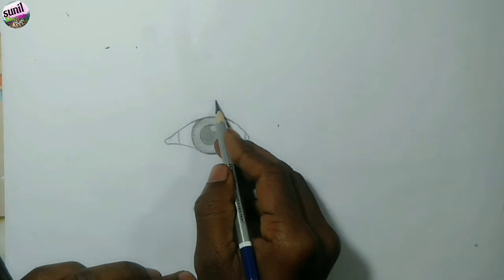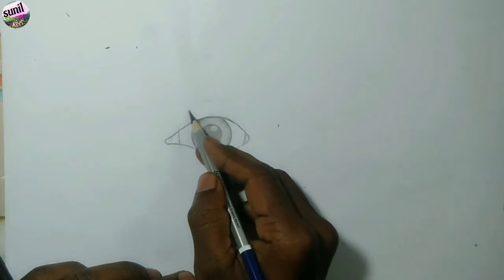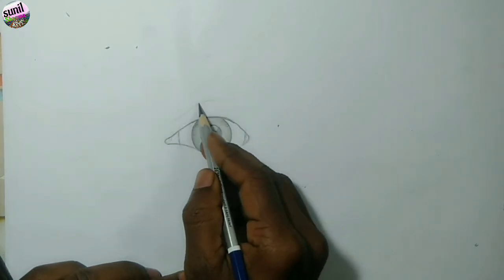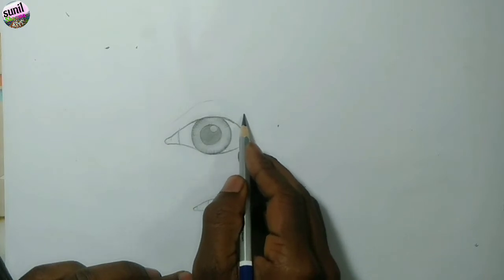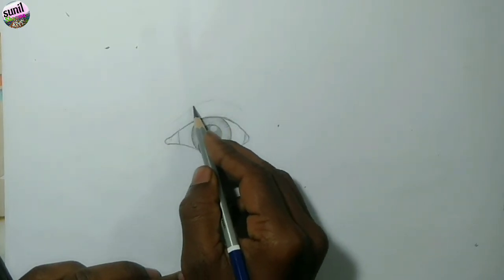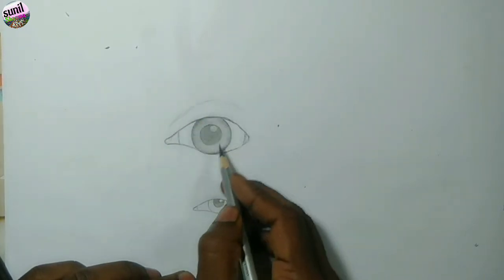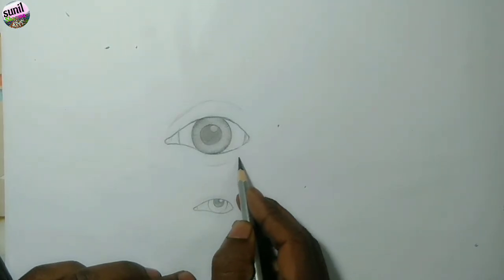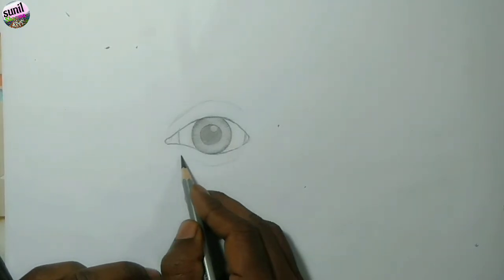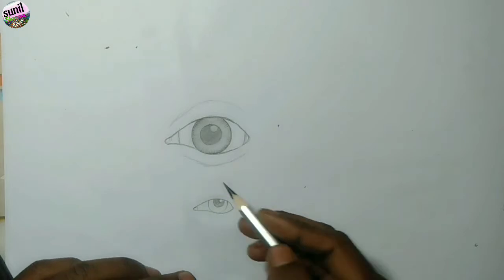This is our eye. This is our white part. We decide where the eye is. This is the upper part and the lower part.